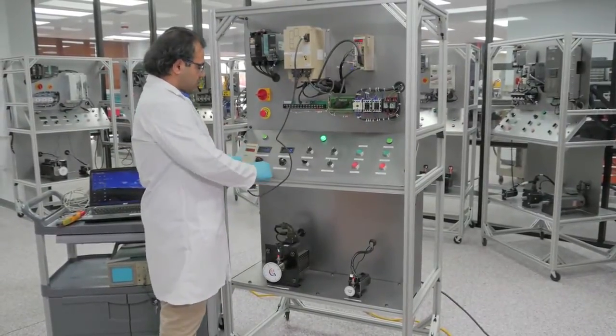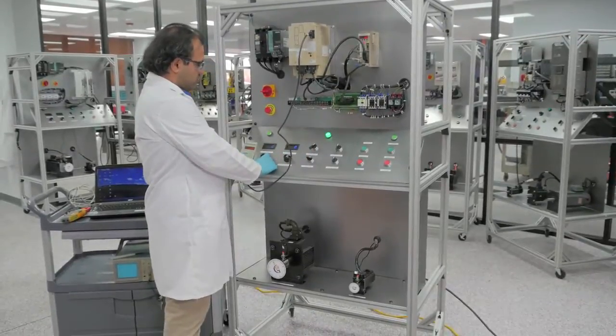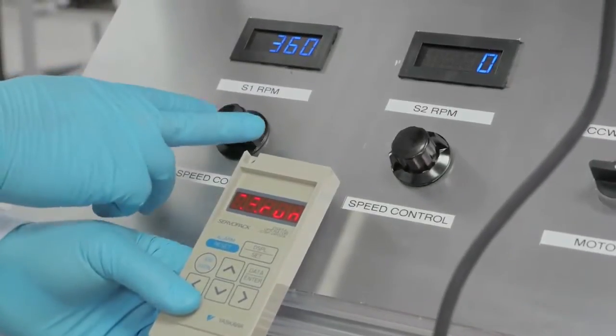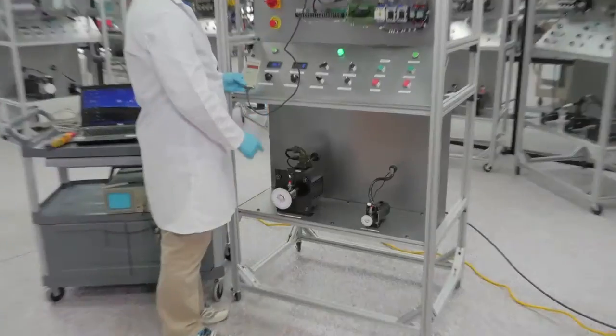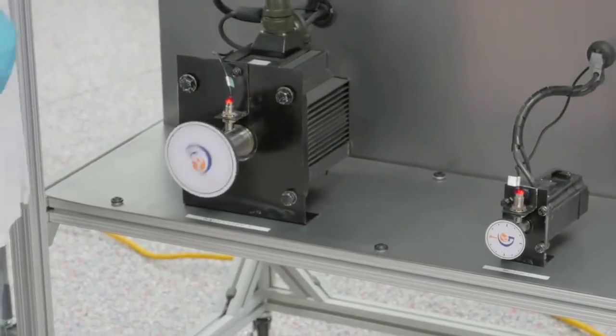We can send the command in the backward or forward and run the drive. As you see our motor was running at 362 RPM in forward mode.